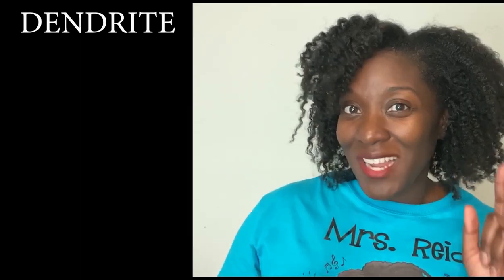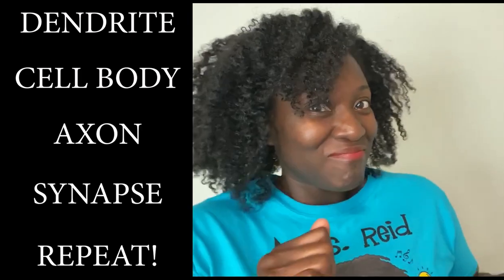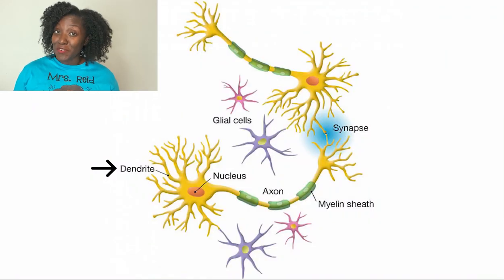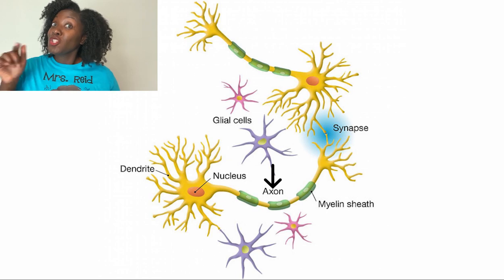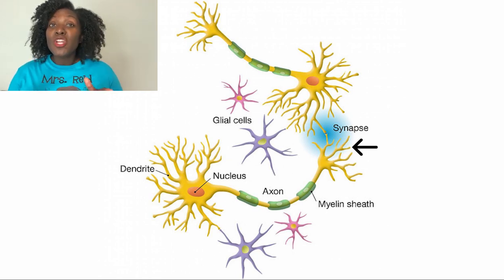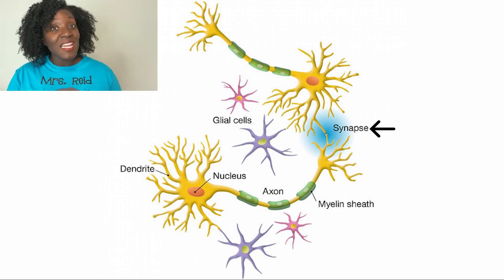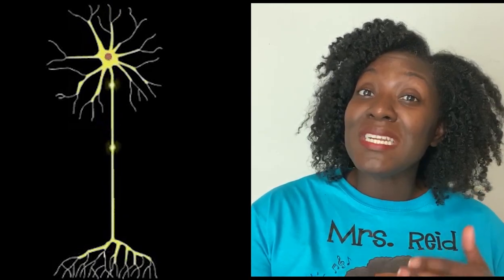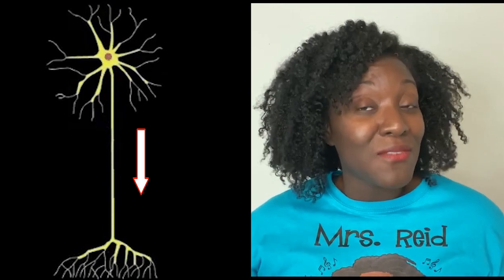If you watched my nervous system lecture, we learned that the direction of a nerve impulse is dendrite, cell body, axon, synapse, repeat. Dendrites receive signals from other neurons. The axon transmits the signal. The axon terminals transmit signals across the synapse to dendrites of a different neuron. The myelin sheath speeds up signal transmission across the axon. These features allow the neuron to send information down the axon and away from the cell body — this is what we call action potential.